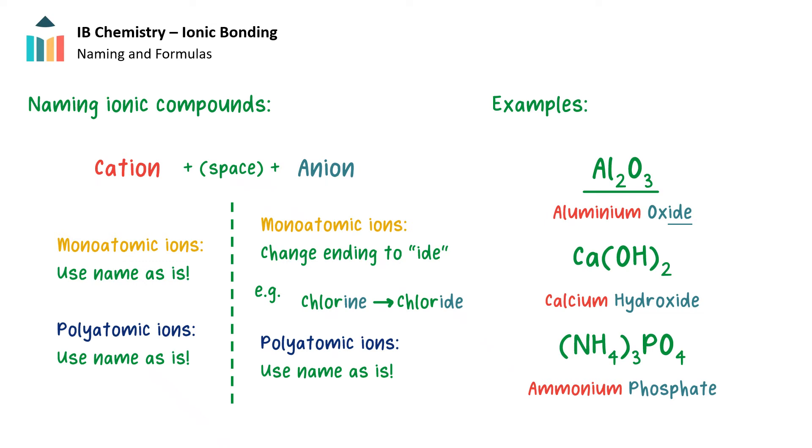Al2O3 has aluminum as a cation. Remember, for cations we keep the name as is. Oxygen is the anion here, and remember for monoatomic ions we change the ending to -ide. This makes aluminum oxide as the correct name for this compound.